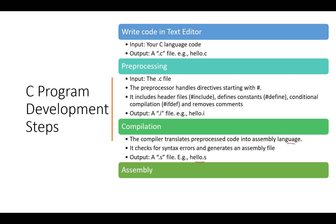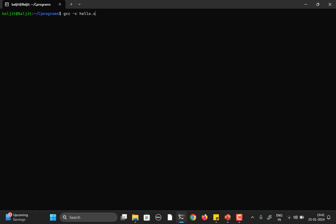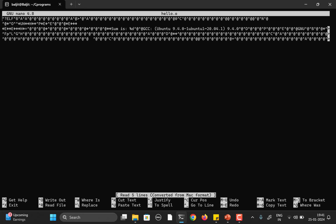The next phase is assembly, done by the assembler. The assembly language code is converted into machine-level language code, or object code. The assembler generates a .o file. We use gcc -c hello.s to convert the assembly language code into object code, giving us a hello.o file. If you open it with nano hello.o, you see machine-readable code — not human readable.